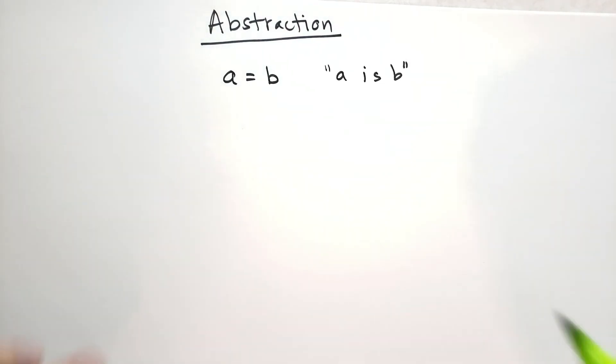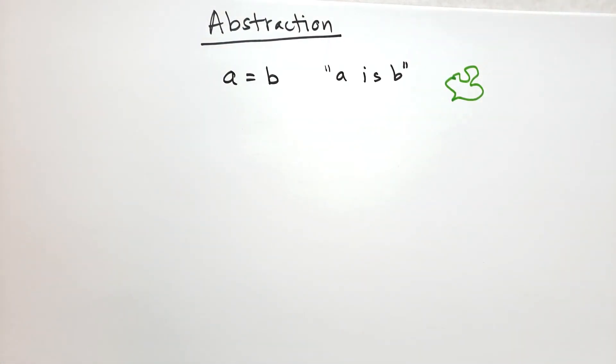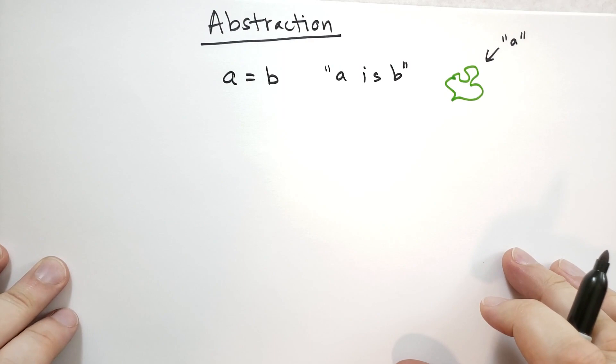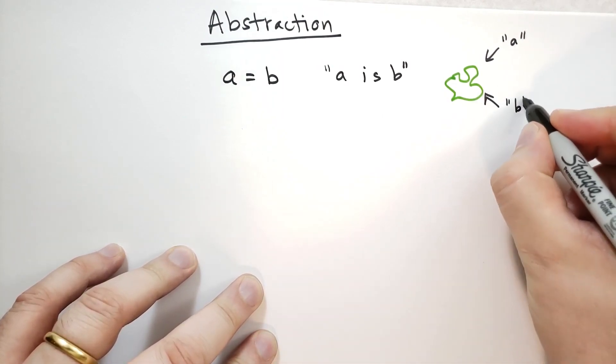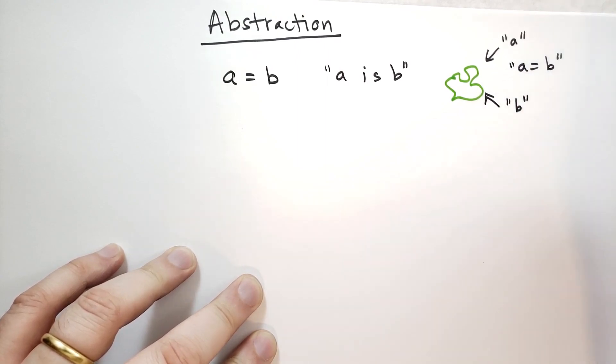Suppose that I have over here this weird blobby shape, and I call this thing a. So I look at it and I say that is a. Now if you also call this something, you call it b, then we can say together that a and b are in fact the same thing.